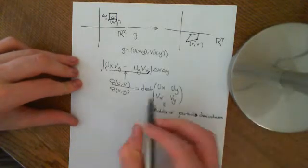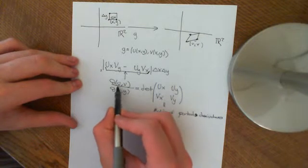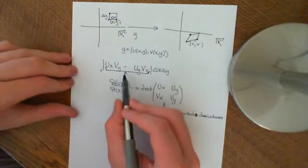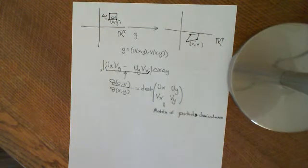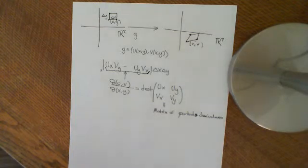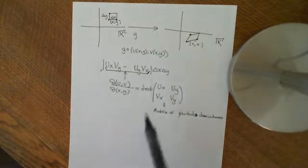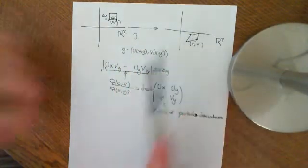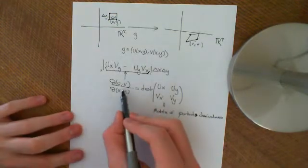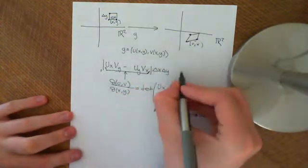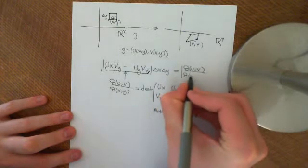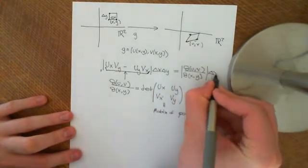If you take the determinant of that matrix, that is the Jacobian of u, v with respect to x, y. This takes the place of the derivative in the transformation equation — in the single-variable case, the derivative told us how to transform the interval delta x into delta y. Here, if you want to transform this little square into its image, the Jacobian is the constant you need, and specifically you need the modulus of this Jacobian, times delta x, delta y.